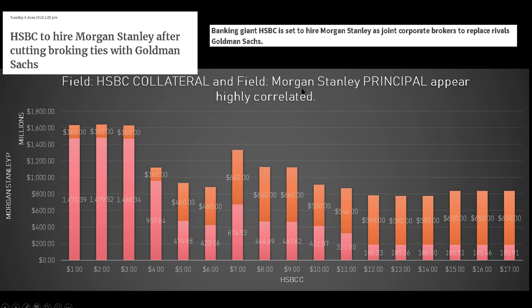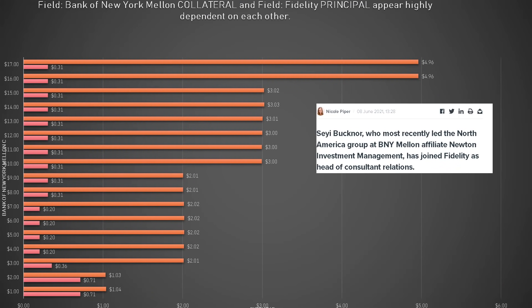Now we look at field Bank of New York Mellon collateral and field Fidelity principal — highly dependent on one another. There's an article from June 8th this year: Say Bucknor, who most recently led the North America group at Bank of New York Mellon-affiliated Newton Investment Management, has joined Fidelity as head of consultant relations. The data shows 496/496, then 31/31, basically flat around 31, drops to two, then 20 cents, then a dollar, then 71 cents. Hard to tell for sure, but the data is interesting.